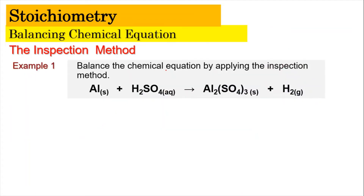To understand the inspection method, let's look at the example. We have to balance the chemical equation using the inspection method. We have aluminium reacting with sulfuric acid to produce aluminium sulfate and hydrogen. Using the inspection method, we balance metals first. The metal here is aluminium. On the product side, we have two aluminium, but on the reactant side we only have one, so we put the number two there. Now aluminium is balanced: two on the left-hand side and two on the right-hand side.